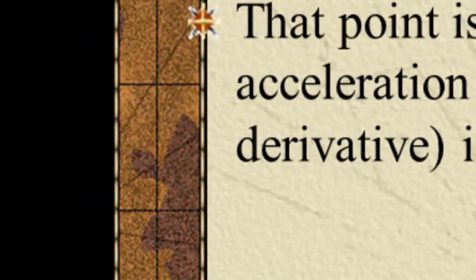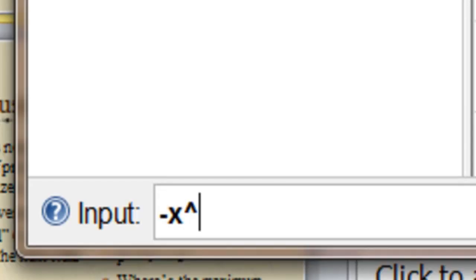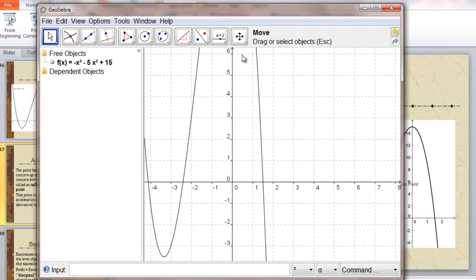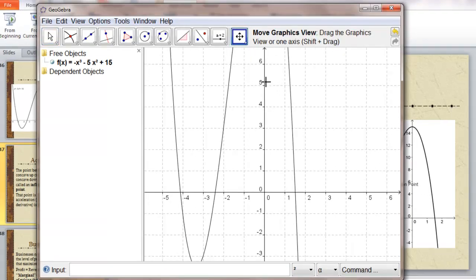Let's take a look at one. Negative x cubed minus 5x squared plus 15. Squeeze it down a little bit.